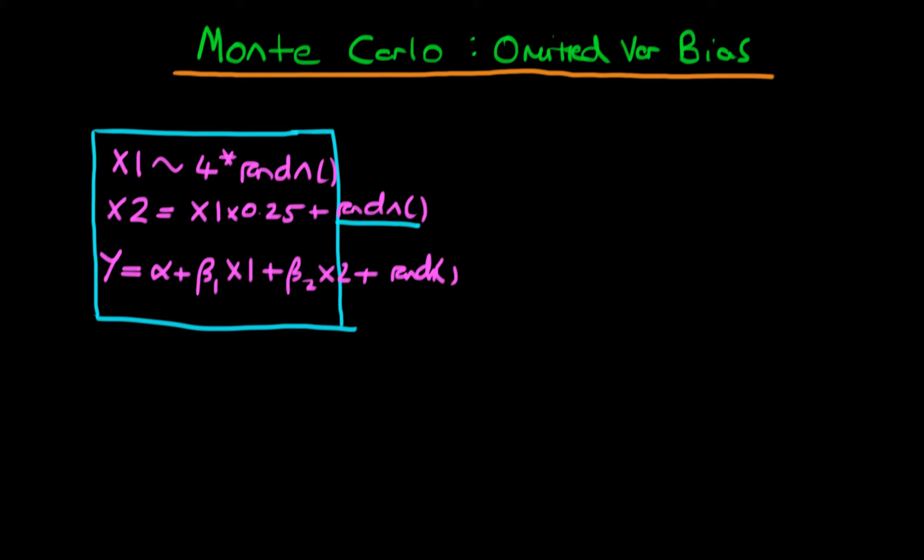So all of these things together define our population and our population processes. And then what we're going to do is we're going to use these population processes to generate samples. And we're going to generate a number of different samples. So we're going to generate sample 1 all the way through to, I think we're going to do 100 different samples.